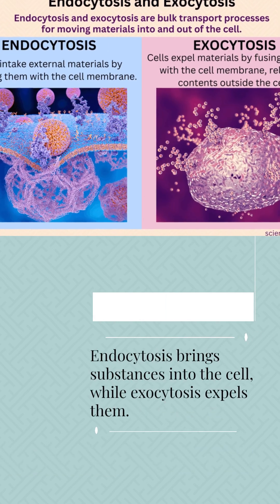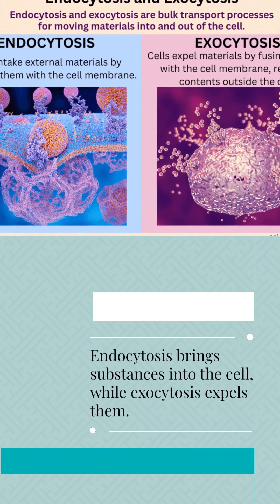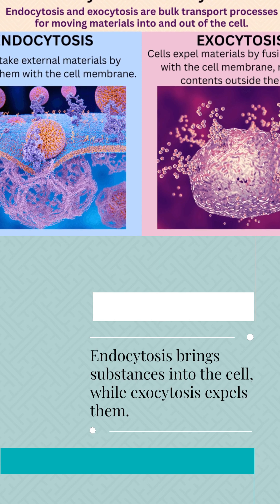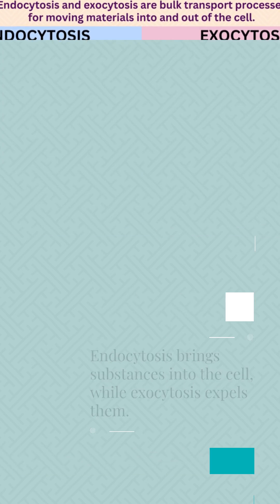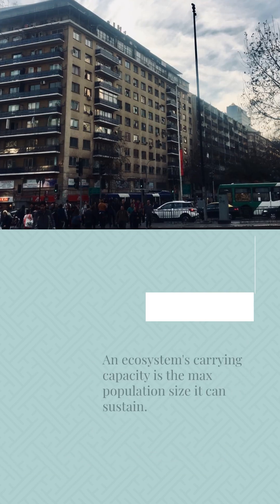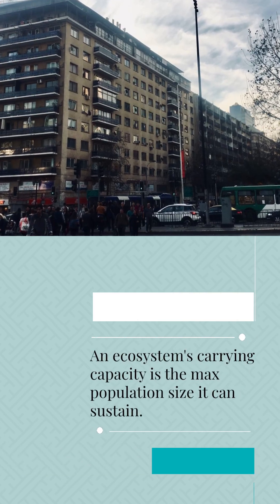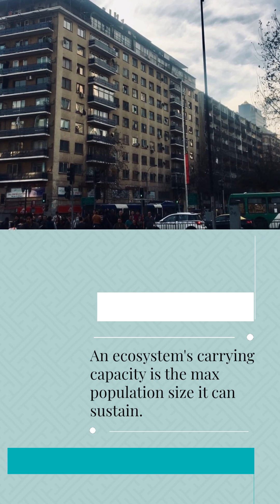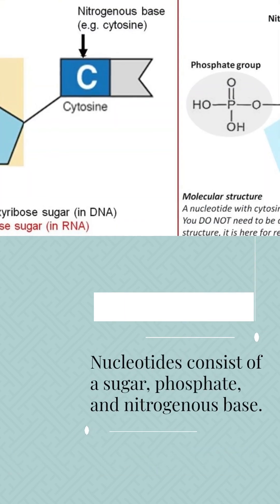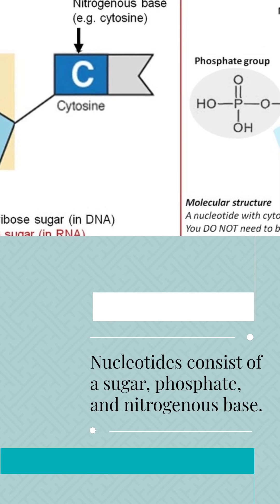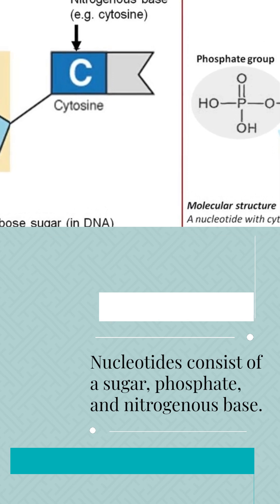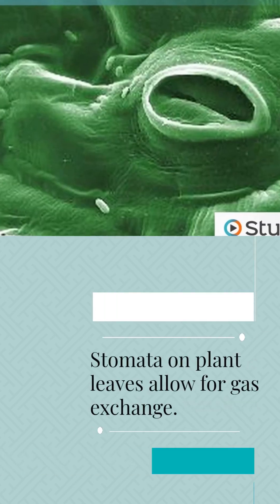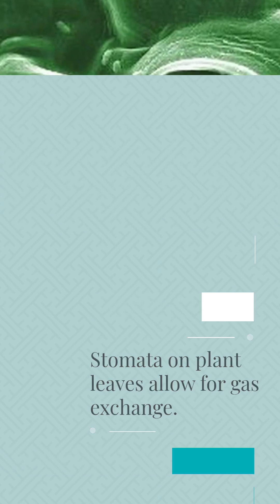Endocytosis brings substances into the cell, while exocytosis expels them. An ecosystem's carrying capacity is the maximum population size it can sustain. Nucleotides consist of a sugar, phosphate, and nitrogenous base. Stomata on plant leaves allow for gas exchange.